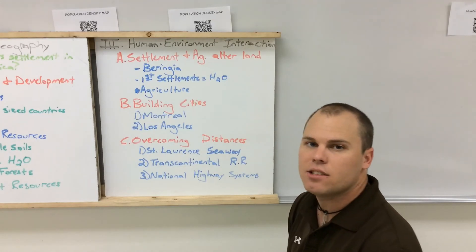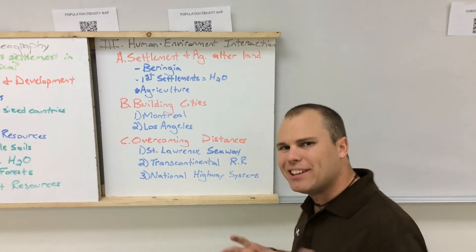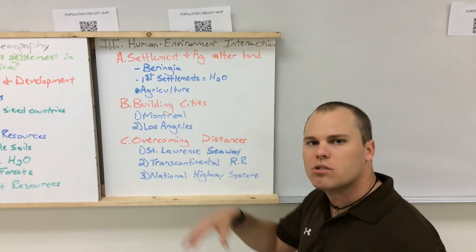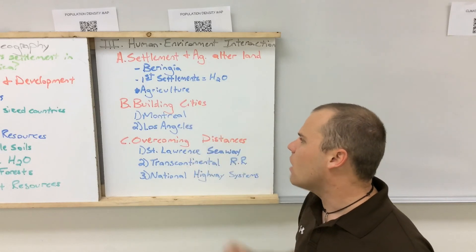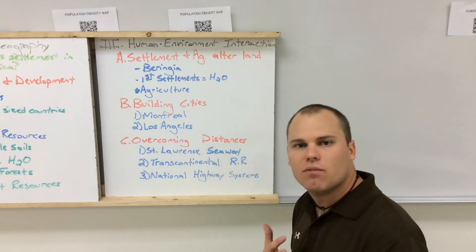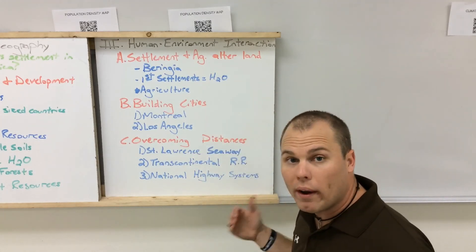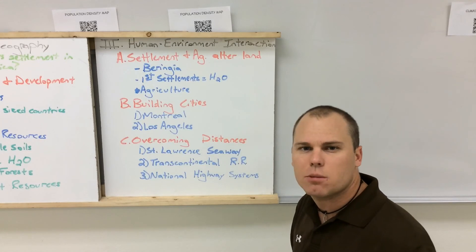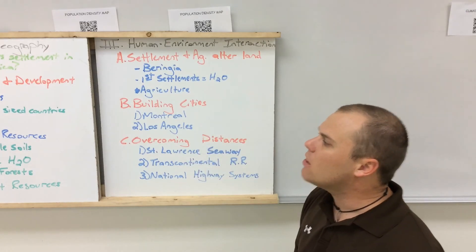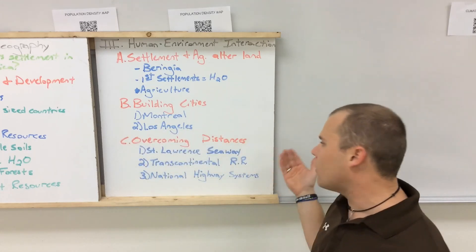Another area of human-environment interaction is the building of cities. Montreal, Canada is an interesting case — it's extremely cold, yet it's a large city because they've actually built parts of the city inside mountains to stay warm. Los Angeles is an example of rapid urbanization driven by the Industrial Revolution and industrialization, requiring focus on transportation systems and providing for large populations. The vast size of these countries means people have had to figure out how to overcome great distances.